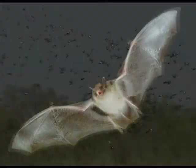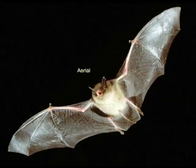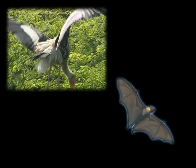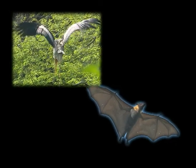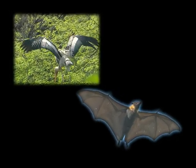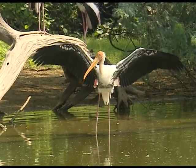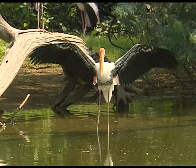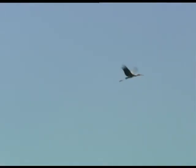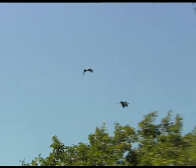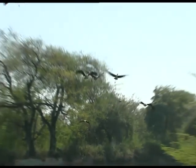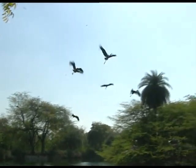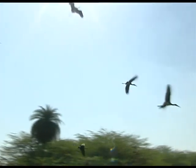Birds and bats are adapted to fly in air and have wings to fly. Wings of birds and bats are modified forelimbs. Flight muscles provide additional strength for flying. Air cavities in bones make the body light, and this light body weight is an adaptation for flight.